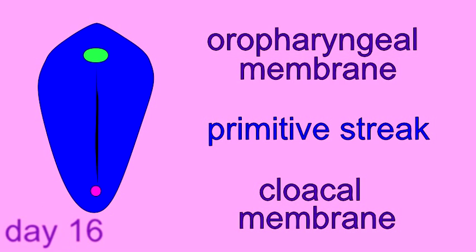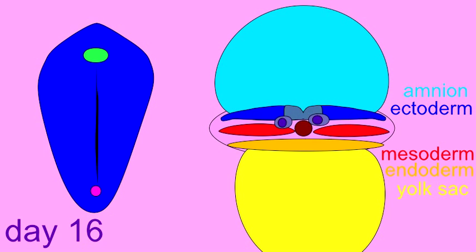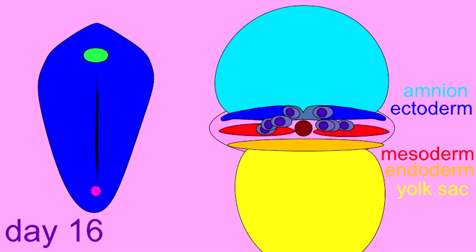This primitive streak has cells which are invaginating. These cells migrate past other cells of the epiblast and detach from it. This migration of cells is important during gastrulation.